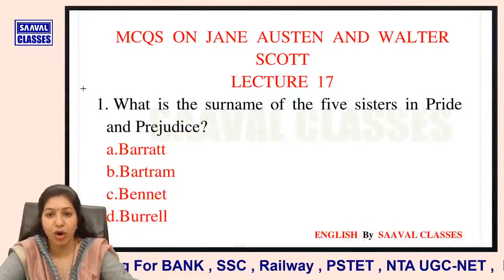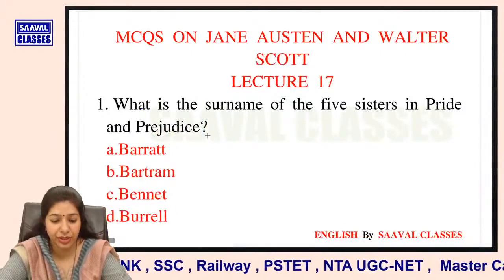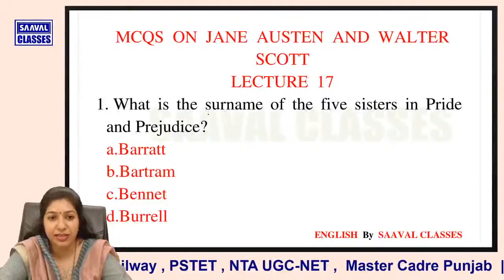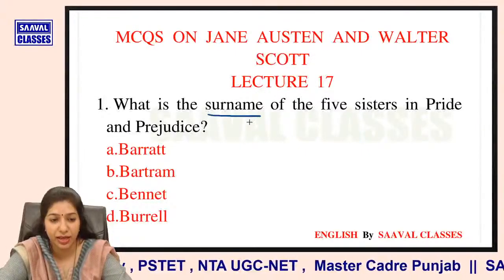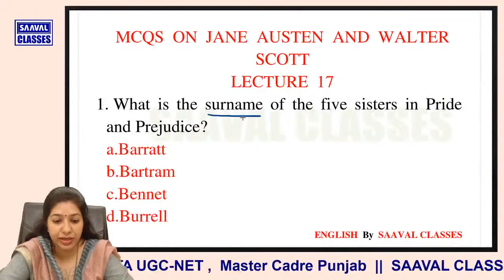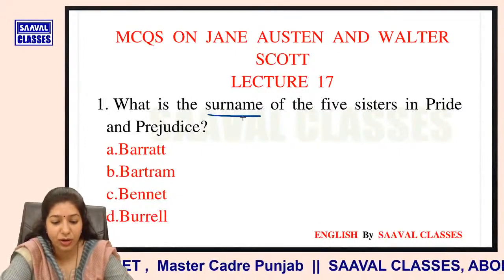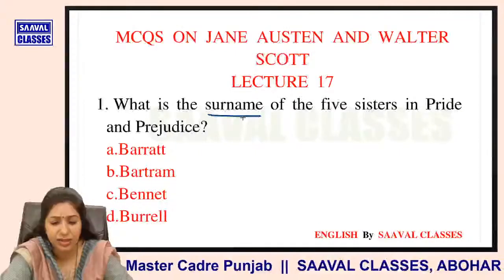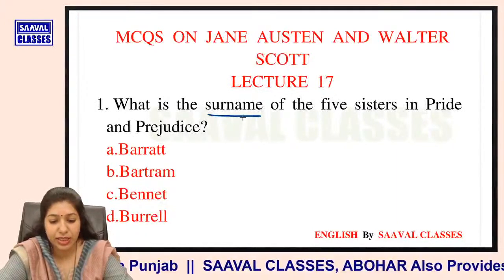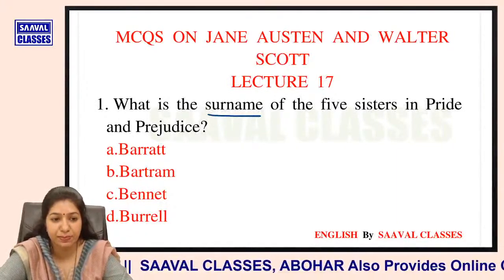Question number one: What is the surname of the five sisters in Pride and Prejudice? Pride and Prejudice mein five sisters ka surname kya hai? The options are Barrett, Bartram, Bennett, ya Varil? It is a very easy and quick question. The answer is Bennett.